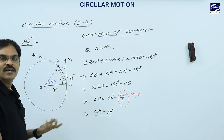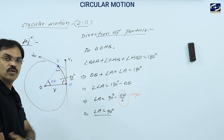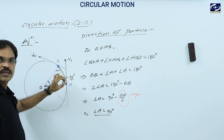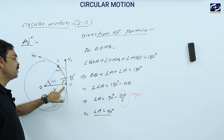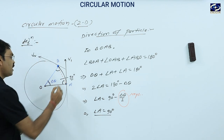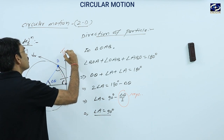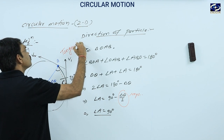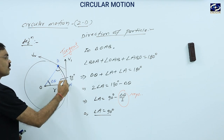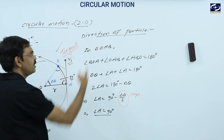Since del theta is a small angle, del theta by 2 is negligible. Therefore angle A equals 90 degrees. We have proved this is 90 degrees. Some may wonder about the third angle of the triangle — del theta is negligible, nearly equal to zero, so A and B become coincident points, and the angle becomes 90 degrees.